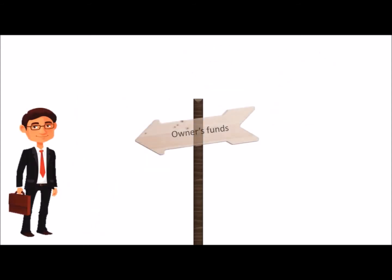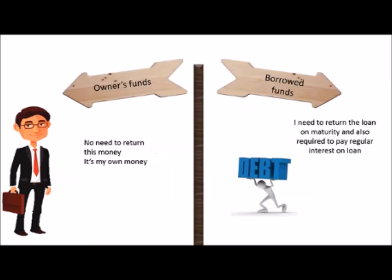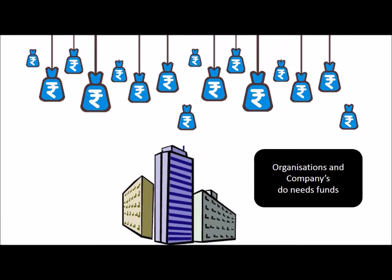Mr. Avinash is using two types of funds: owners funds and borrowed funds. There is no need to return owners funds, but borrowed funds have to be returned and regular interest is to be paid on them.